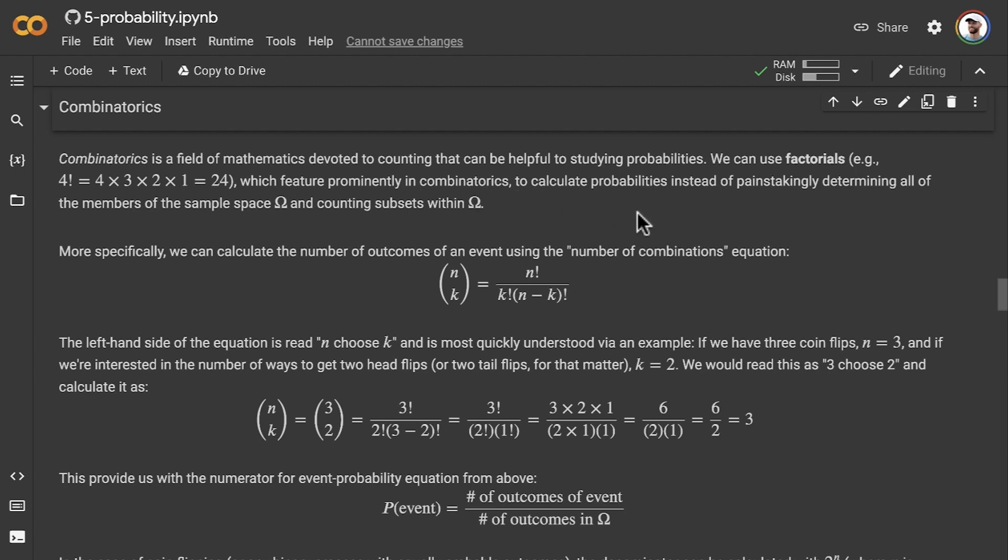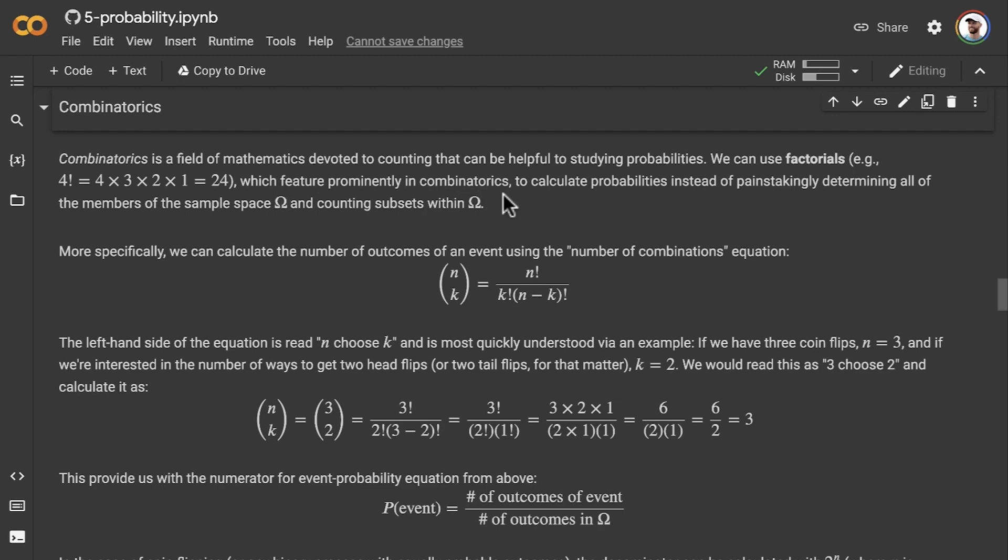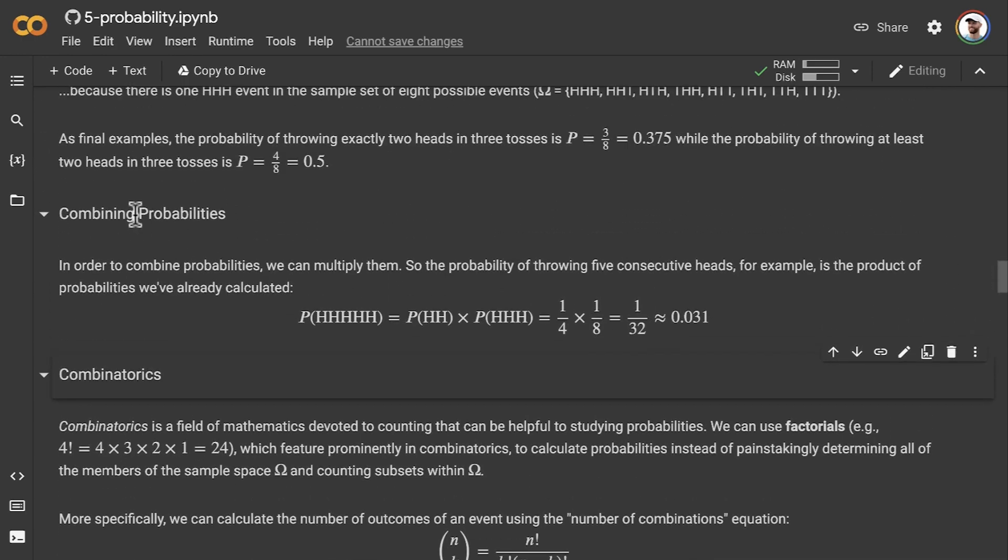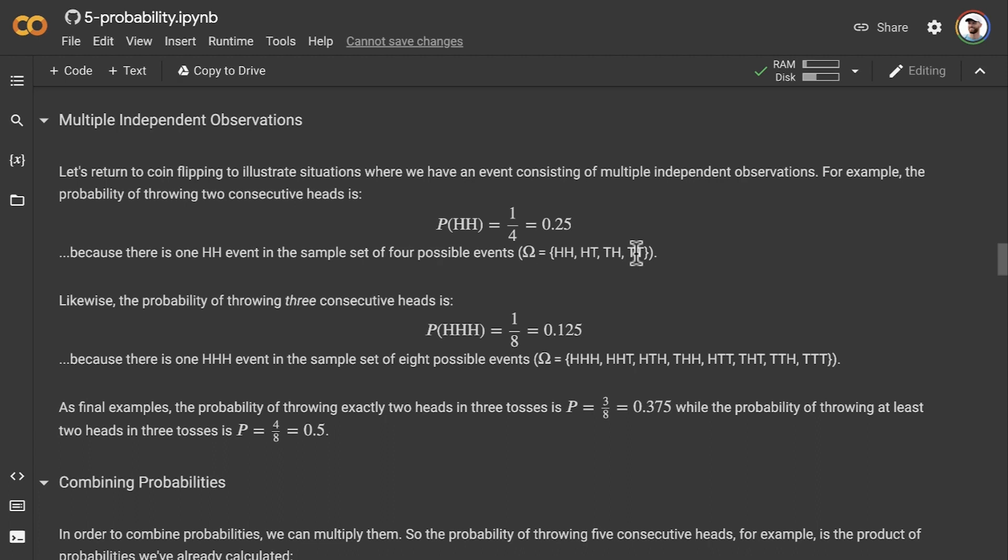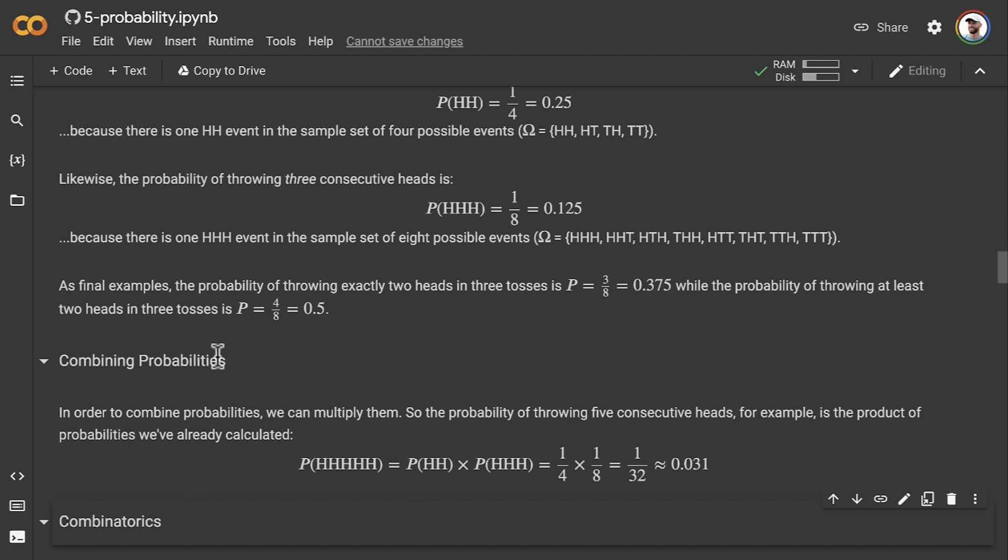They allow us to calculate probabilities instead of painstakingly determining all of the members of a sample space Ω and counting subsets within Ω. If you're not familiar with these concepts, you'll want to check them out in a preceding video where we talked about the sample space Ω. We went through exercises where we had to figure out the probability of getting heads twice by working through all the possible outcomes when we do two coin flips, or calculate the probability of getting three consecutive heads.